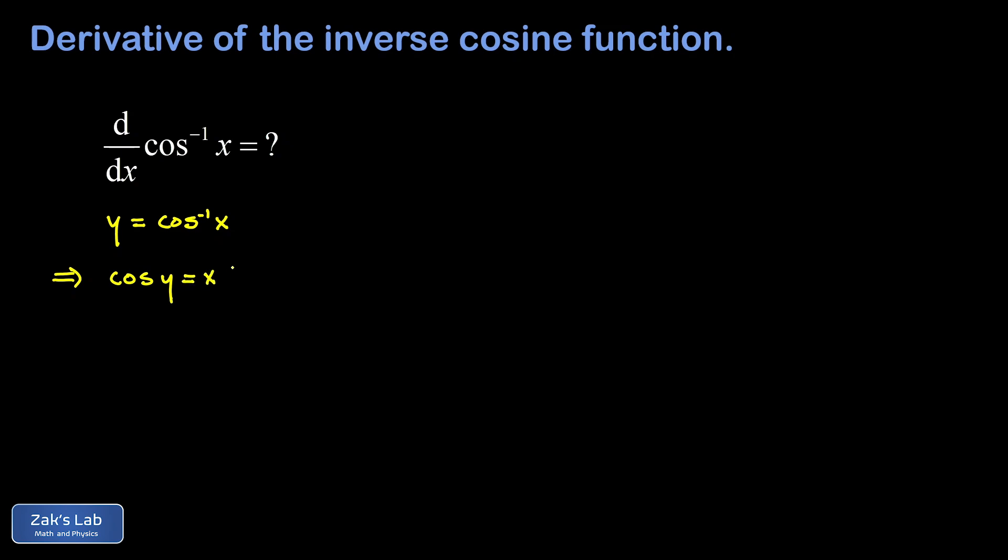Now what we're after here is an expression for dy/dx, in other words the first derivative of this inverse cosine function. So to get at that, we're going to take the derivative with respect to x on the left and right hand sides of this equation. And it's critical to realize that the cosine of y is actually a function composition here because y is a function of x.